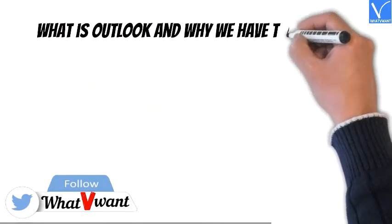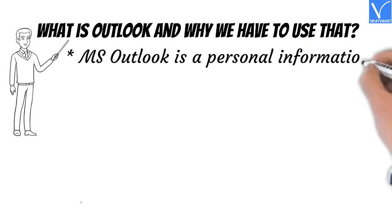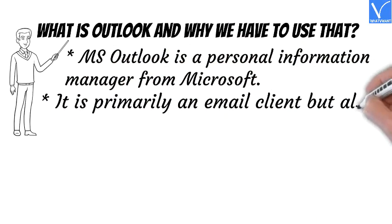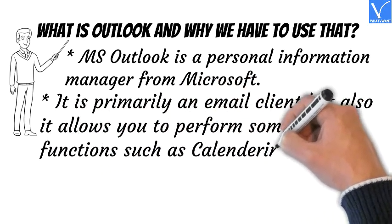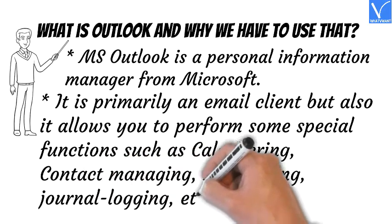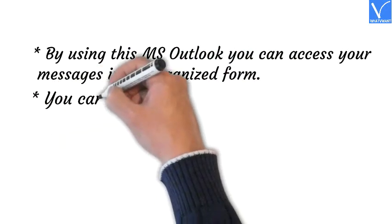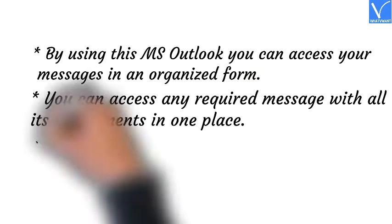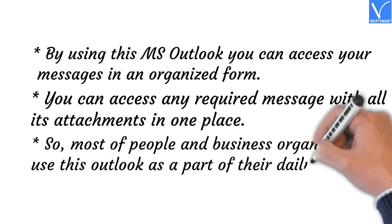What is Outlook and why do we have to use it? MS Outlook is a personal information manager from Microsoft. It is primarily an email client, but it also allows you to perform special functions such as calendaring, contact managing, note-taking, journal logging, etc. By using MS Outlook you can access your messages in an organized form, and access any required message with all its attachments in one place. So most people and business organizations use Outlook as part of their daily work.